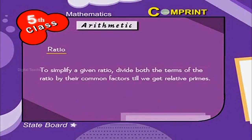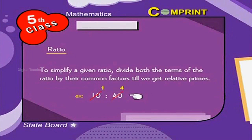To simplify a given ratio, divide both the terms of the ratio by their common factors till we get relative primes. For example, 10 is to 40. 10 1 is 10, 10 4s are 40. So we write it as 1 is to 4.